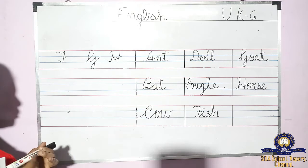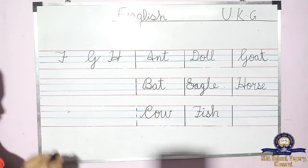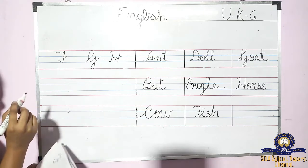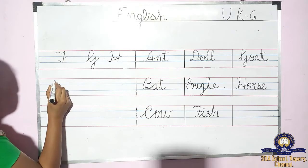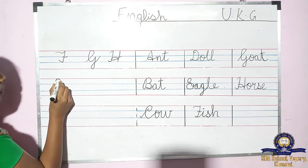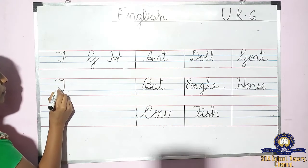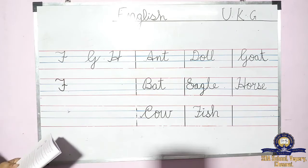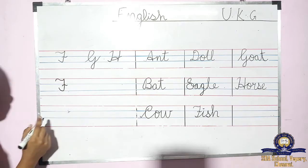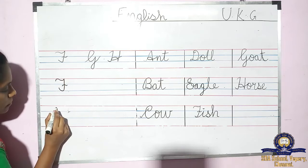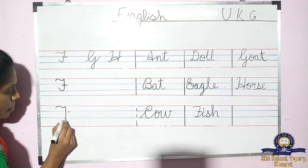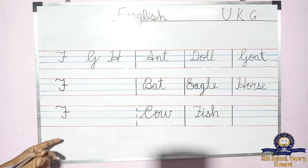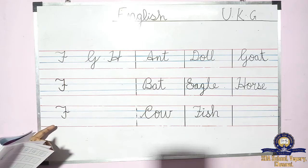Now I'm going to teach you how to write the letters. See — first bend down, bend a little bit, then curve a little bit, then come down like this. That makes F. What letter is this? F. Again see — bend down like this. F. What letter is this? F. What letter? F.